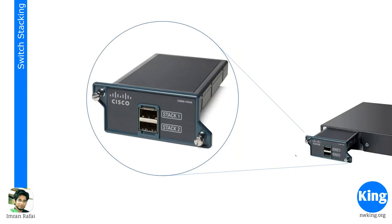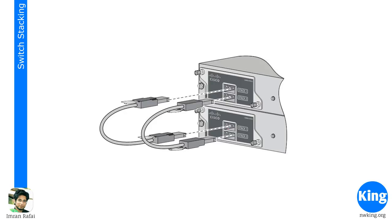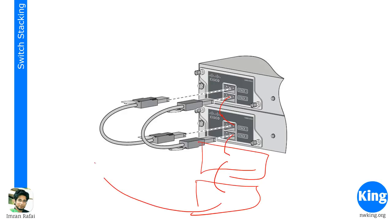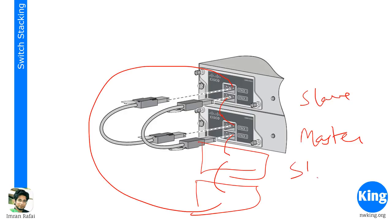Cisco has many stacking technologies, but the one we're going to discuss is called FlexStack. This is a FlexStack module. At the back of your switch there is a port where you insert this module. These modules have two links. You connect multiple devices in series — switch one to switch two, switch two to switch three, switch three to switch four — and then loop back from switch four to switch one, forming a ring. Once you do this, one device becomes the master and the others are slaves. As an administrator, you contact the master and make changes.